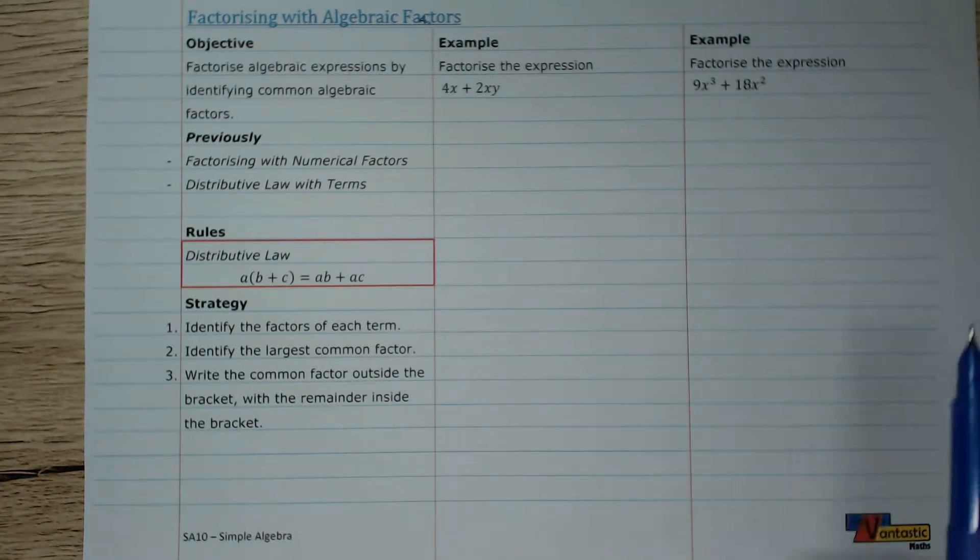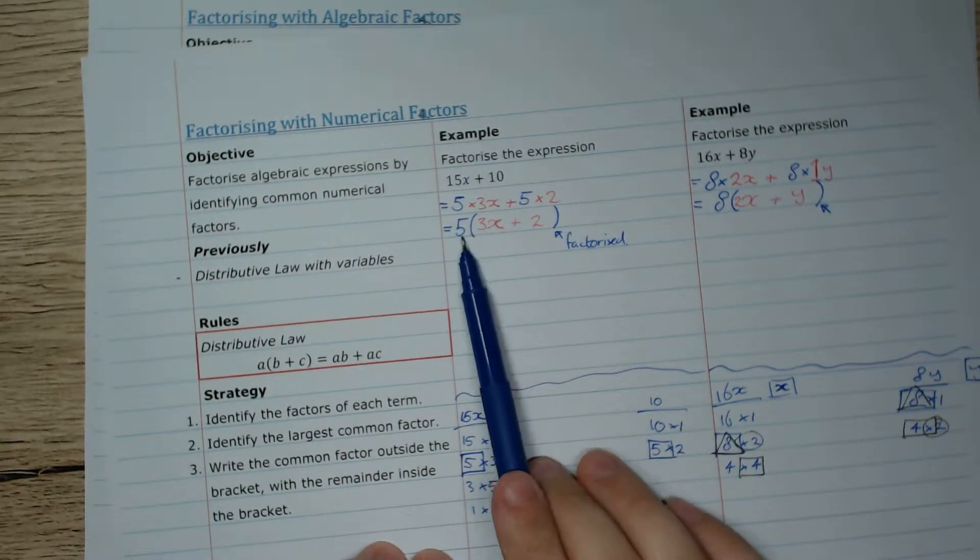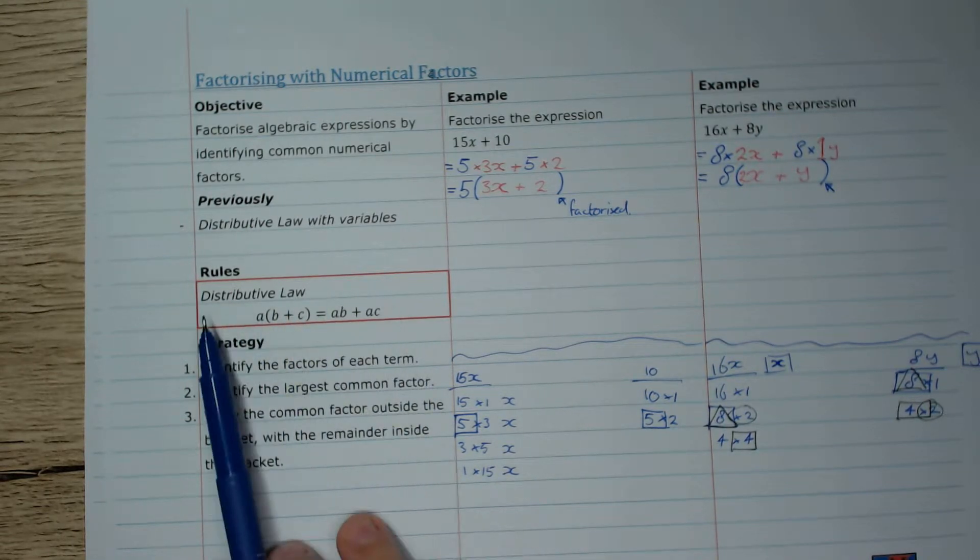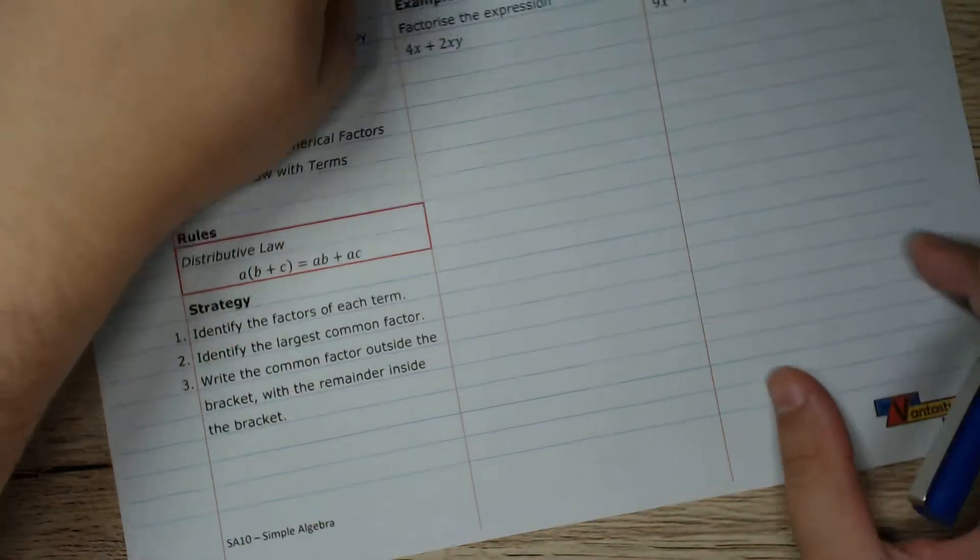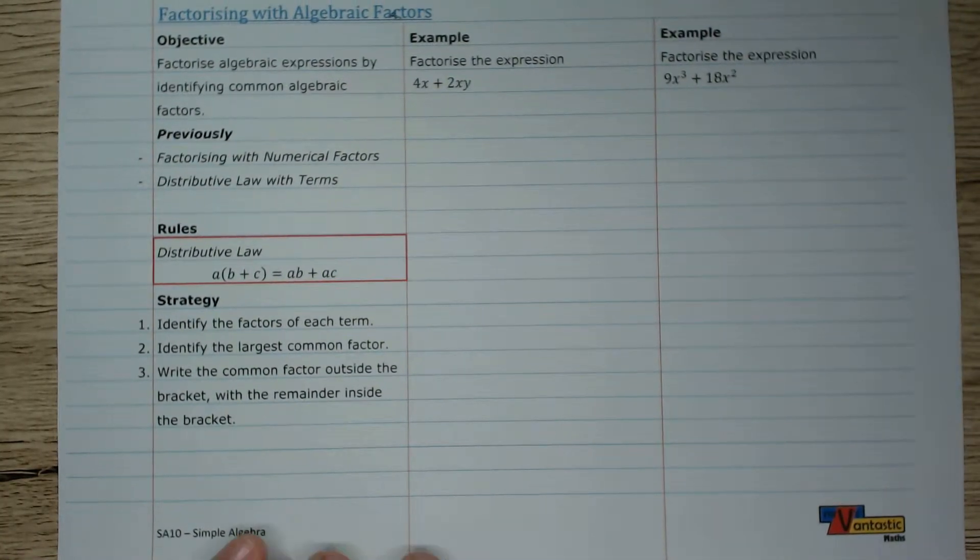In the previous video we've seen how we can pull out a numerical factor to undistribute an expression and factorize it. Now we want to do the same thing, but in these expressions we can pull out not just numbers but algebraic terms.